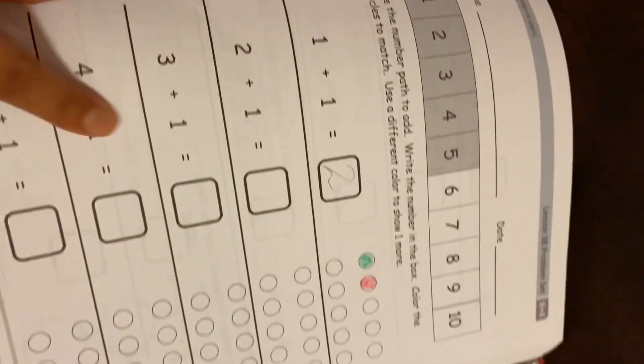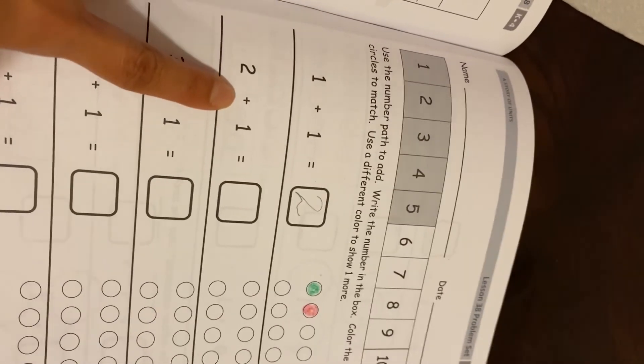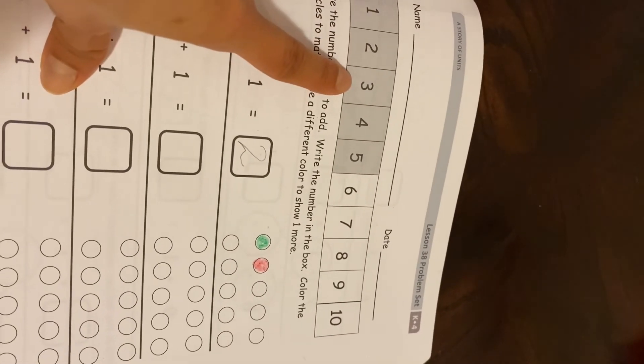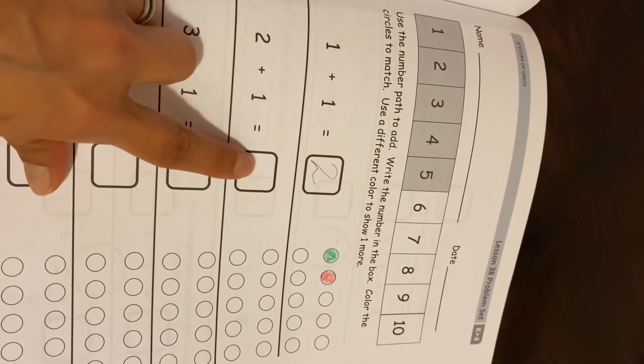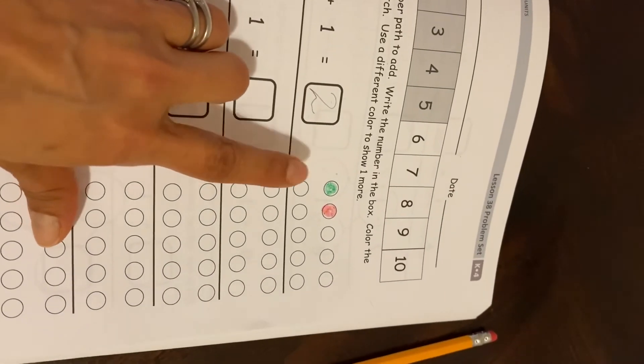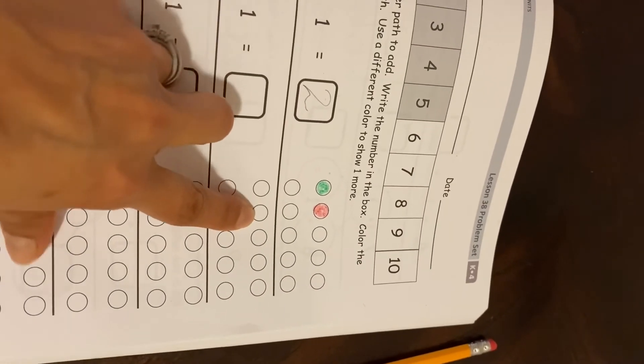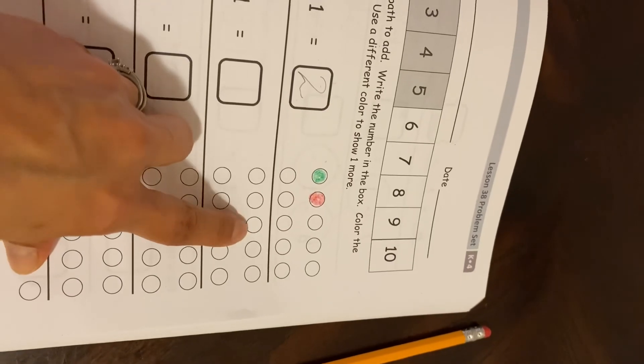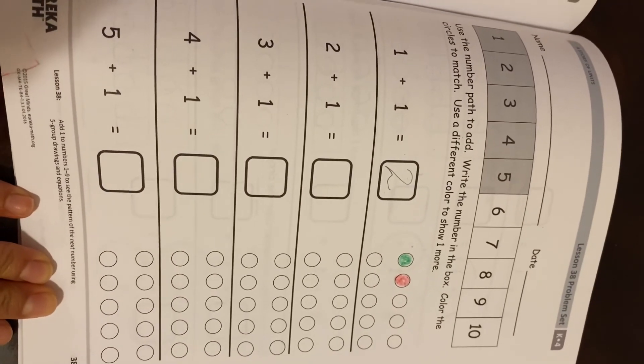And that's how you're going to complete the rest. So you're going to do two plus one equals. You're going to use the number path. You have two plus one more equals. Write the number in the box and then color in two, one color and then another color to show one more. Okay. All right.